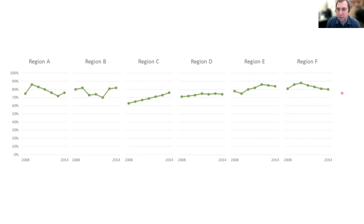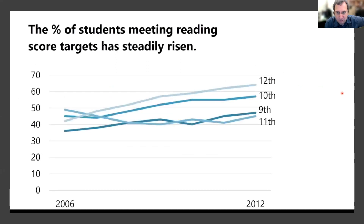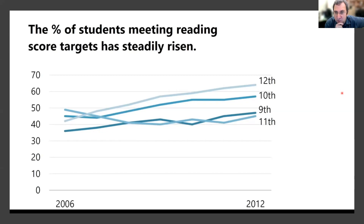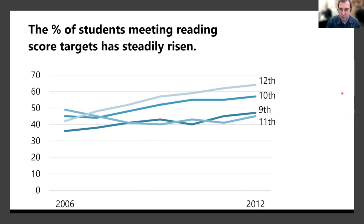Let me show another kind of confusing plot. This is real data: percent of students meeting reading score targets has steadily risen. There are some years — 2006 to 2012 — and some different grades, ninth to twelfth grade. Some people will see something like this and their mind will just turn off. It's hard to take in a lot of information like this, even though it isn't a huge amount — just a few graphs over time.